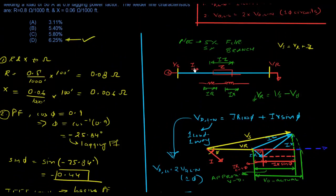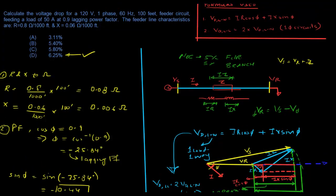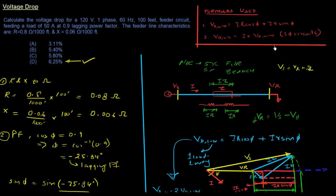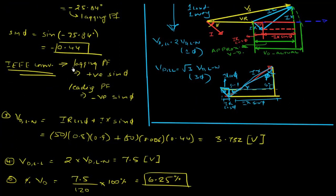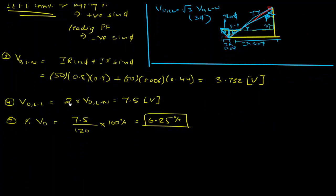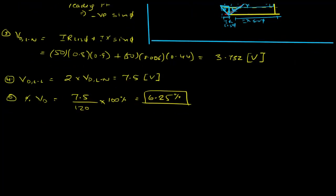Option D is our correct answer. The calculation is straightforward once you know the formula. Often you're given the feeder size — such as a #10, #12, or 350 MCM cable — and you can look up Table 9 in the NEC for R and X values in ohms per thousand feet and follow the same steps. Remember: sin(phi) is positive for lagging power factor; multiply by 2 for single-phase and by √3 for three-phase.